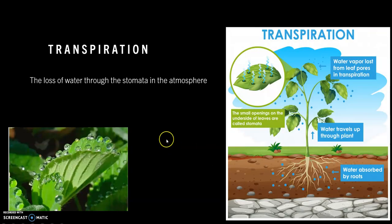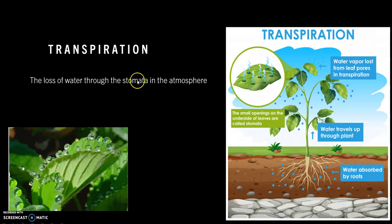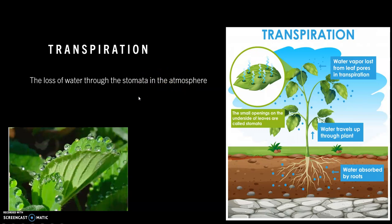Now, the next thing to know is transpiration. Transpiration is basically the loss of water through the stomata into the atmosphere. First of all, you must know what stomata is. Stomata are basically known as leaf pores — tiny microscopic holes on leaves that you may be able to see if you put them under a magnifying glass or a microscope.